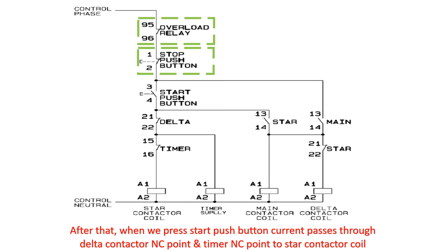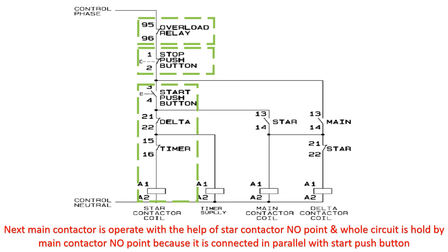When we press the start push button, current passes through the delta contactor NC point and timer NC point to the star contactor coil. Next, the main contactor operates with the help of the star contactor NO point, and the whole circuit is held by the main contactor NO point because it is connected in parallel with the start push button.